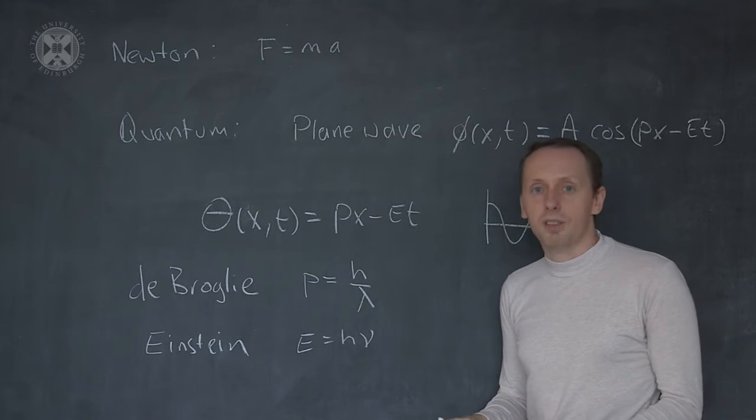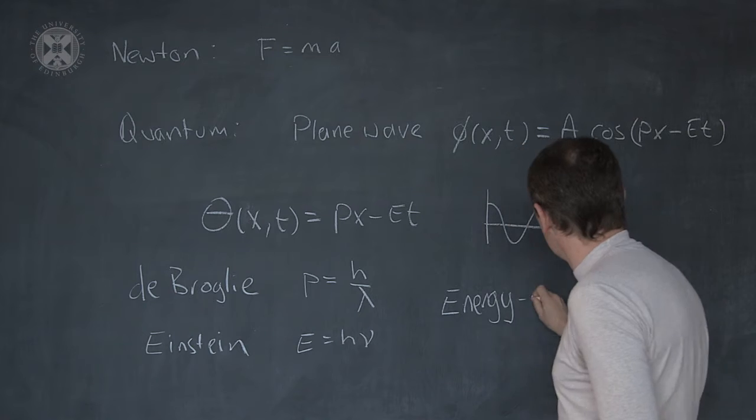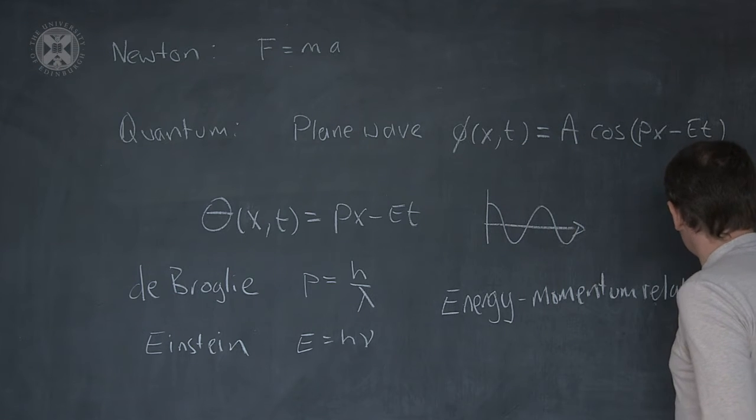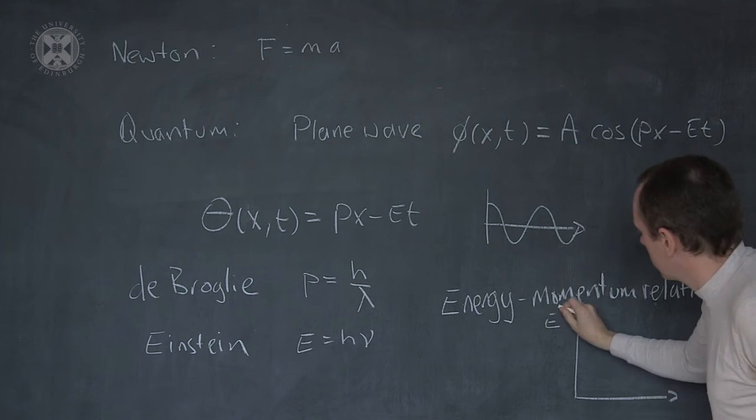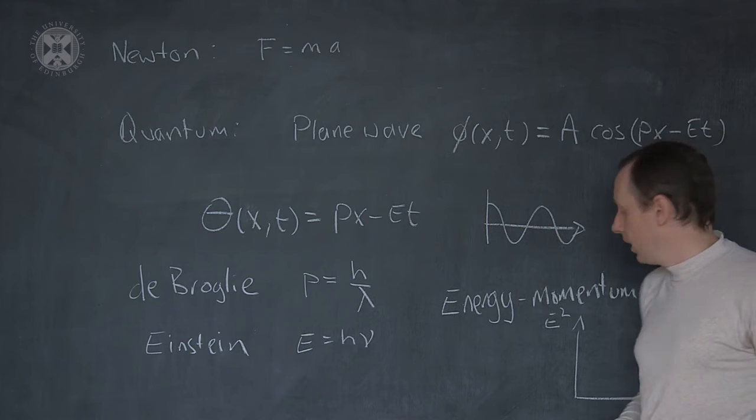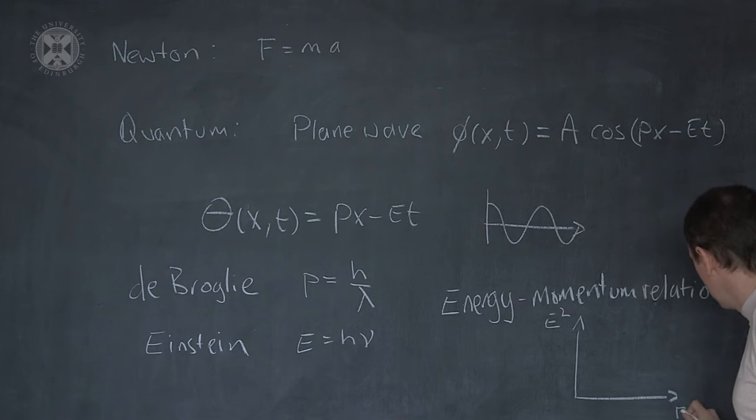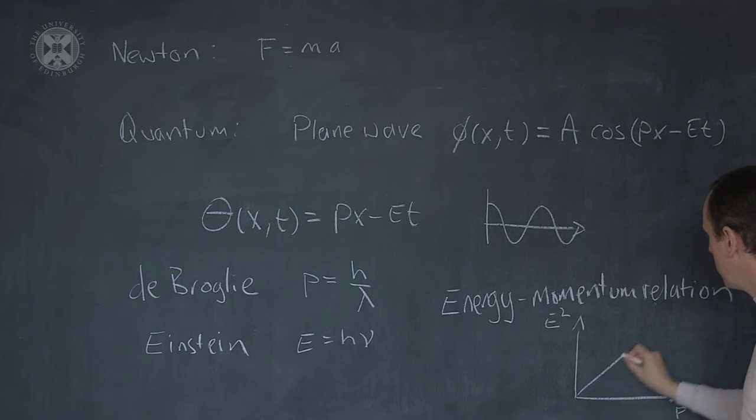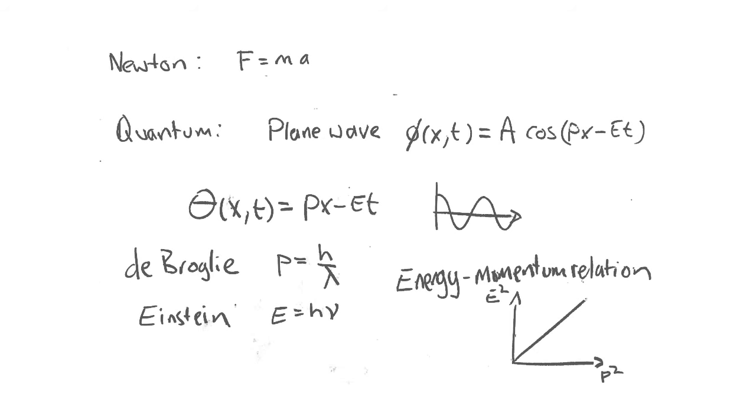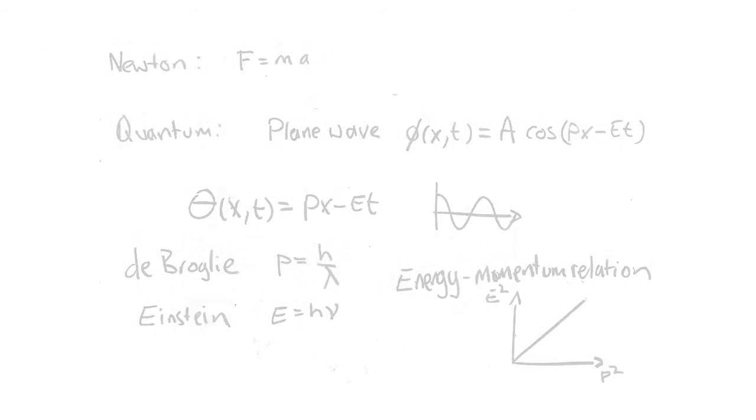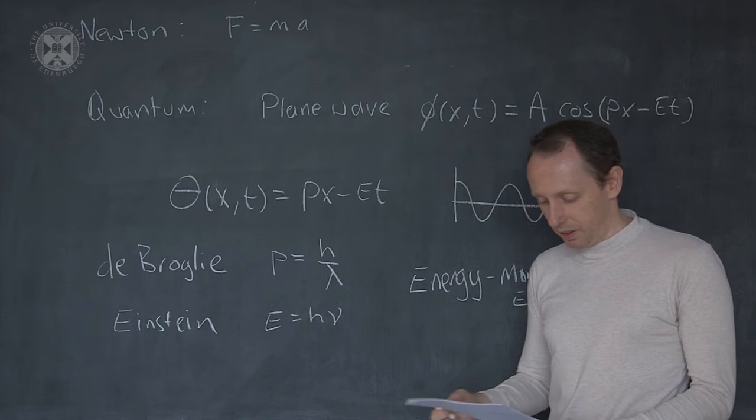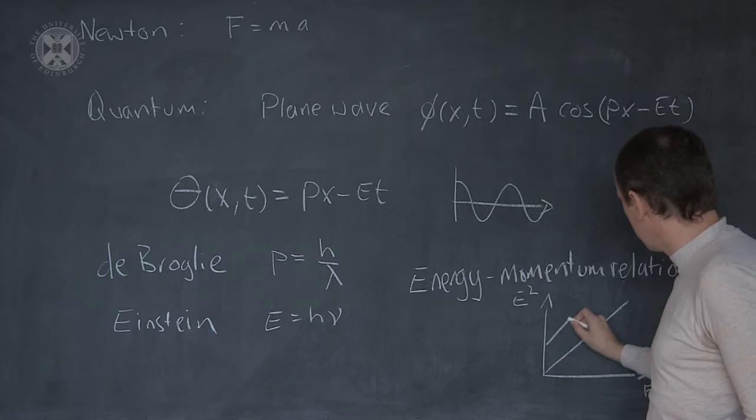For a given particle, the energy depends on the momentum in a specific way. For massless particles, the square of the energy is proportional to the square of the momentum. But for massive particles, there is rest energy, or rest mass, E equals mc squared.